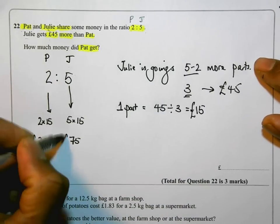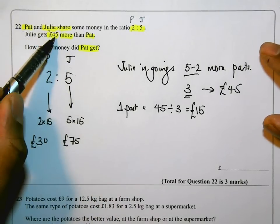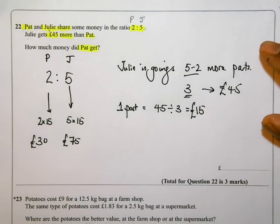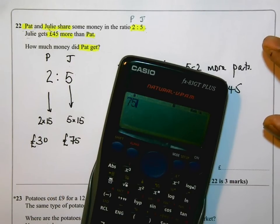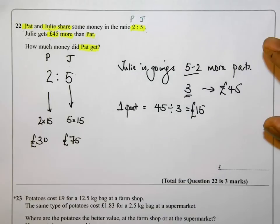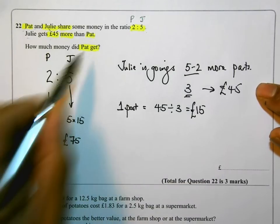You can see Julie does get £45 more than Pat, because if I do 75 take away 30, I do get 45. So this is all correct. But if I read the question, how much money did Pat get? Pat got £30.